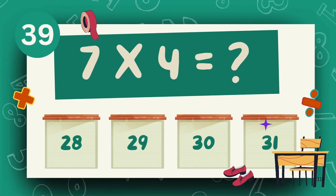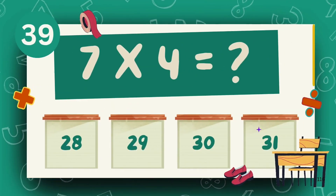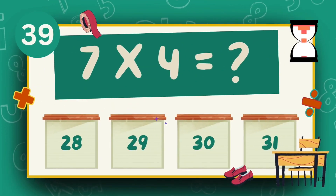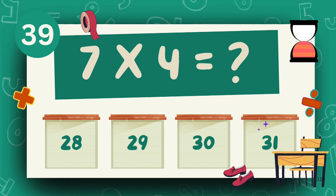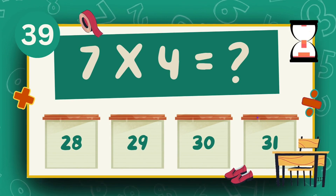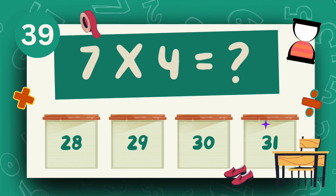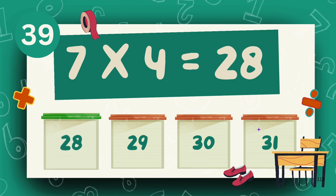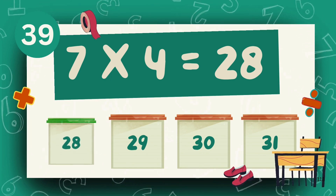What is seven multiply four? The answer is twenty-eight.